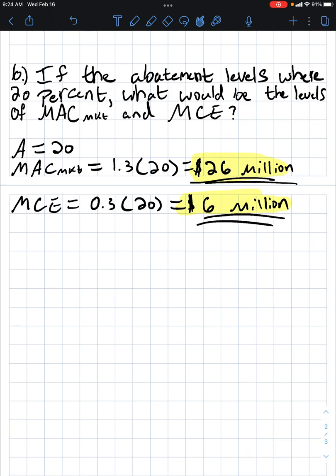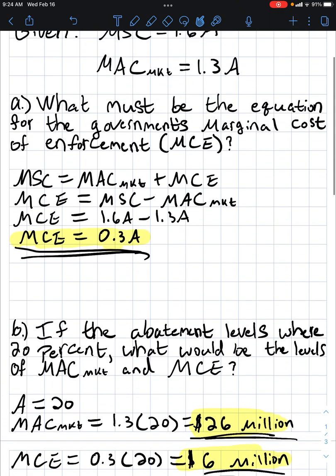Both of these values tell us about the change in total cost of abatement at each marginal value associated at 20%. Therefore, with the 20% abatement level, the marginal cost of enforcement for the government will be 6 million and marginal abatement cost of air polluters across the nation will be 26 million.